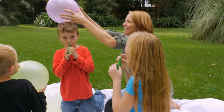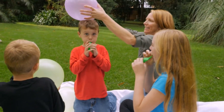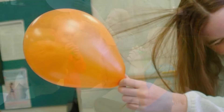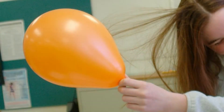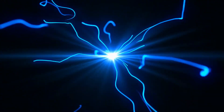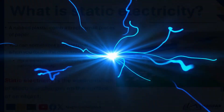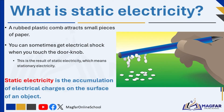Have you ever observed the following? A rubbed balloon attracts hair. A rubbed plastic comb attracts small pieces of paper. You get an electrical shock when you touch a doorknob. A rubbed plastic comb attracts water. This is the result of static electricity, which means stationary electricity.